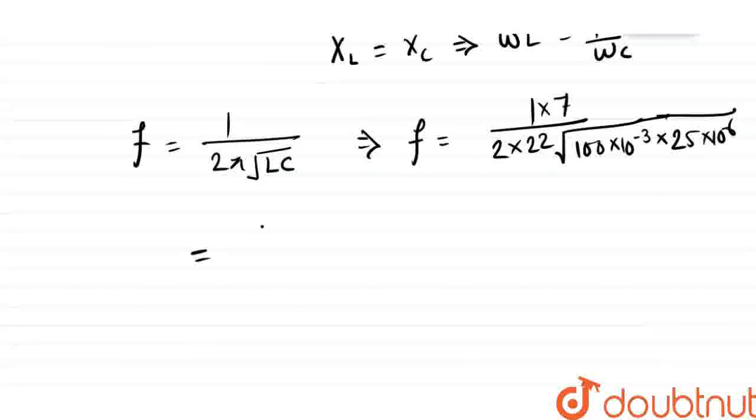Frequency is 7 upon 44 under root. This is 125, 25. We'll solve this - 25 under root is 5.